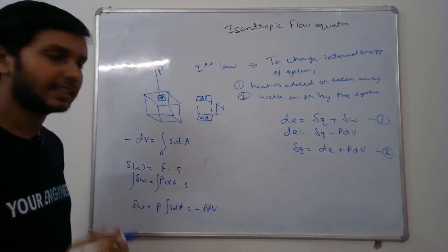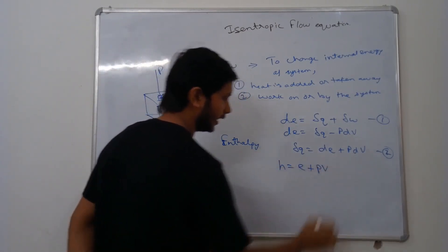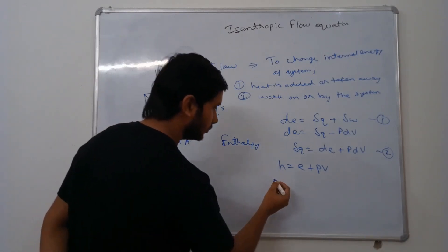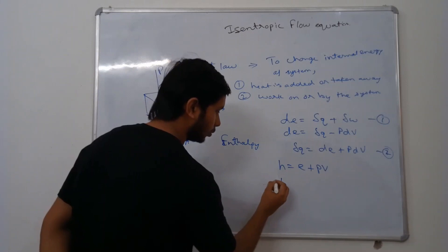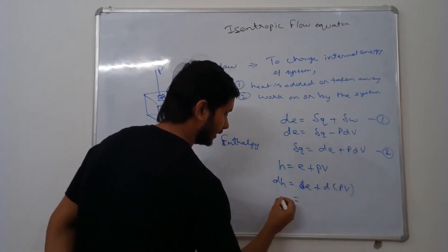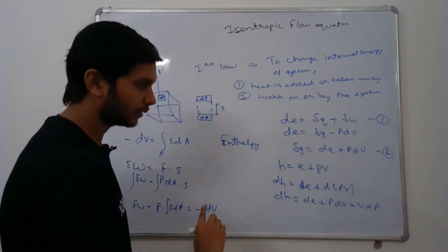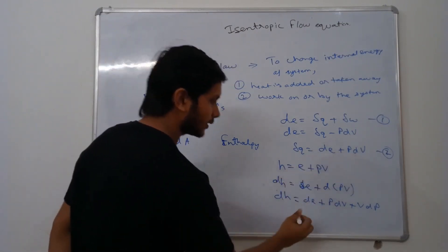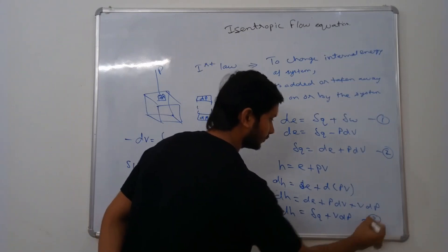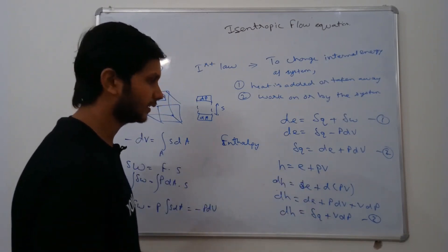There is another form called enthalpy. Enthalpy h is defined as h = e + pV, where internal energy plus pV energy adds to give enthalpy. If we take the differential, dh = de + d(pV) = de + p·dV + V·dp. Since de + p·dV equals δQ, we get dh = δQ + V·dp, which is the second equation.